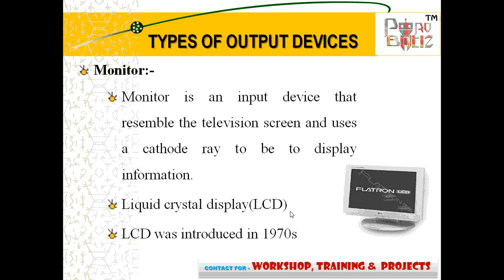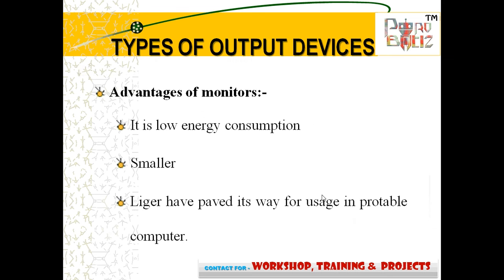Now I discuss about the types of output devices. This is the monitor. A monitor is an output device that resembles a television screen and uses a CRT to display information. Liquid crystal display, LCD, was introduced in 1970. An advantage of the LCD monitor is its low energy consumption; smaller layers have made it suitable for use in portable computers.